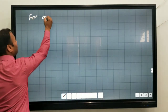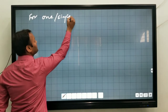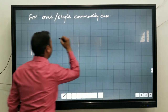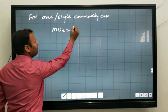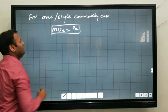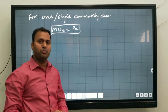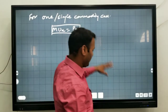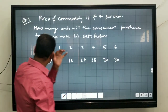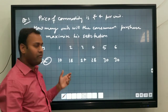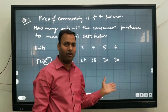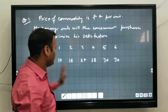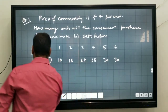For the single commodity case, the formula is MUX is equal to PX. This is the formula for the single commodity case where the consumer gets the maximum level of satisfaction. But in this question, we have not been given MU — we have been given TU. So by using the formula for MU, we can calculate MU from TU.